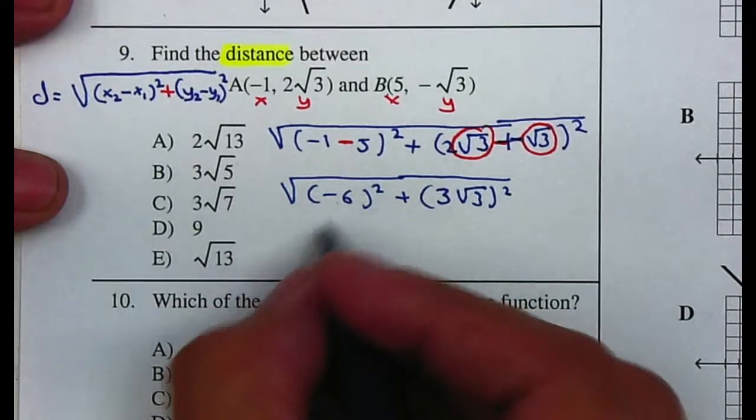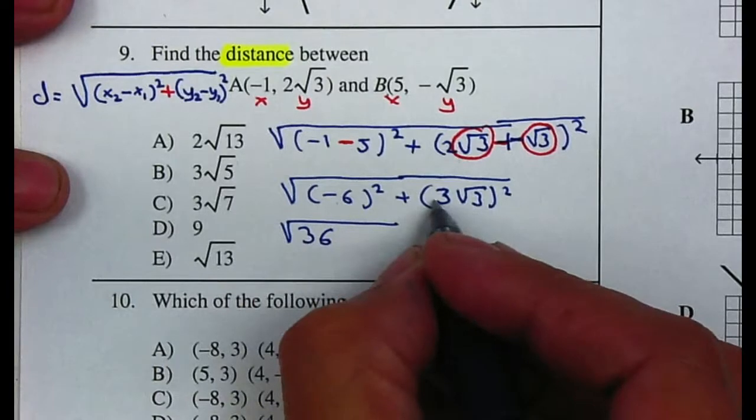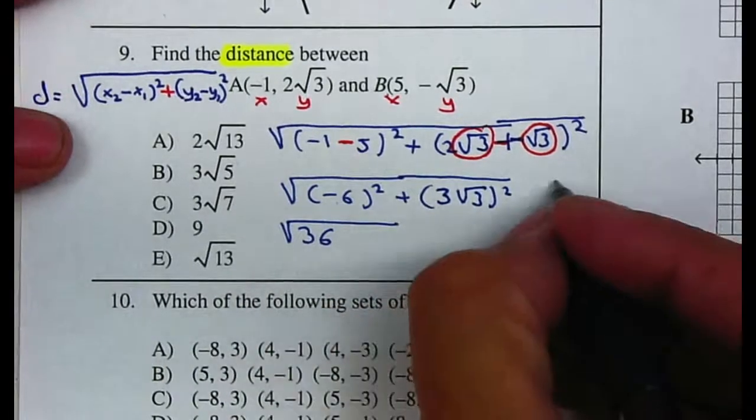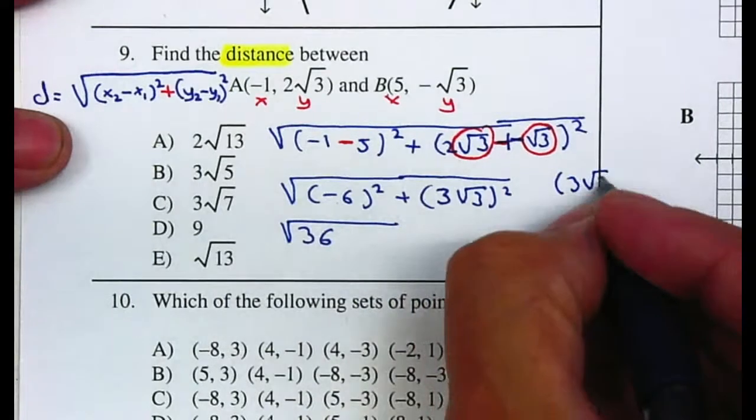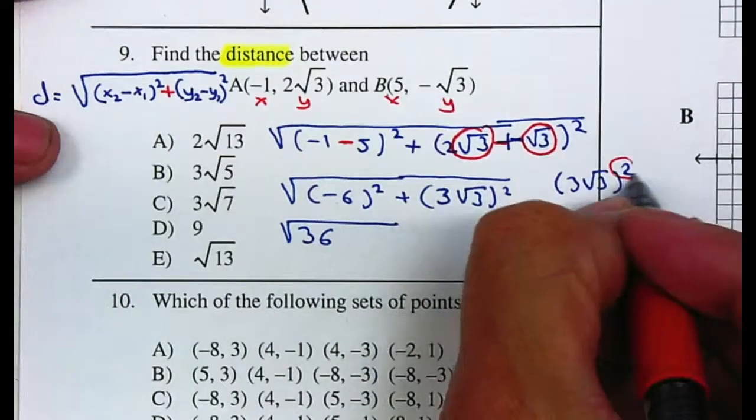Negative 6 squared will be 36, and whenever you square 3√3, we can use the power property of exponents.